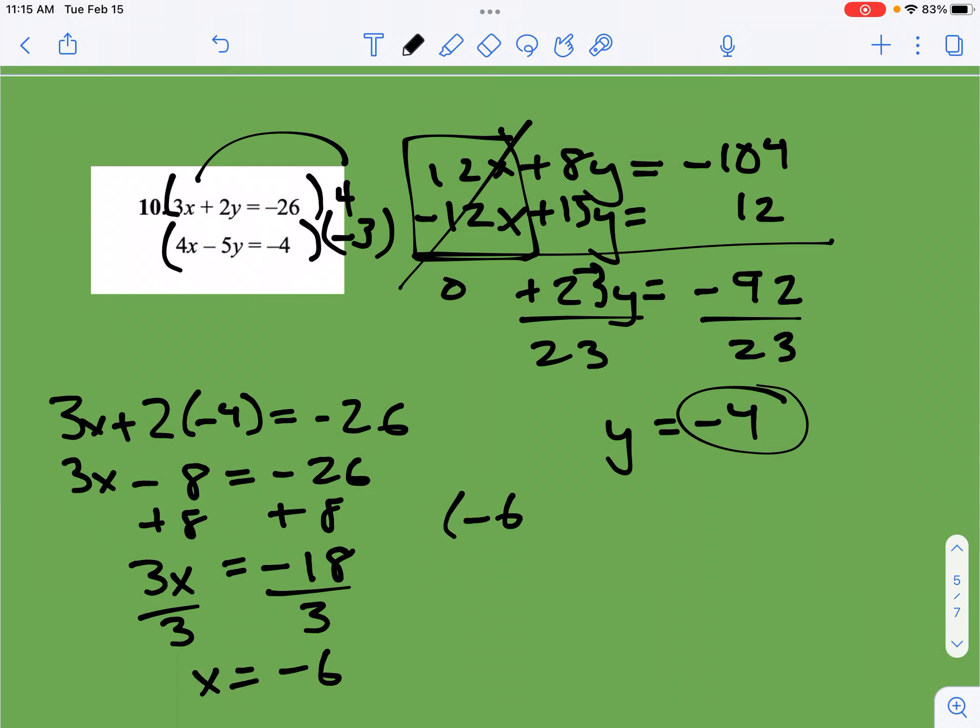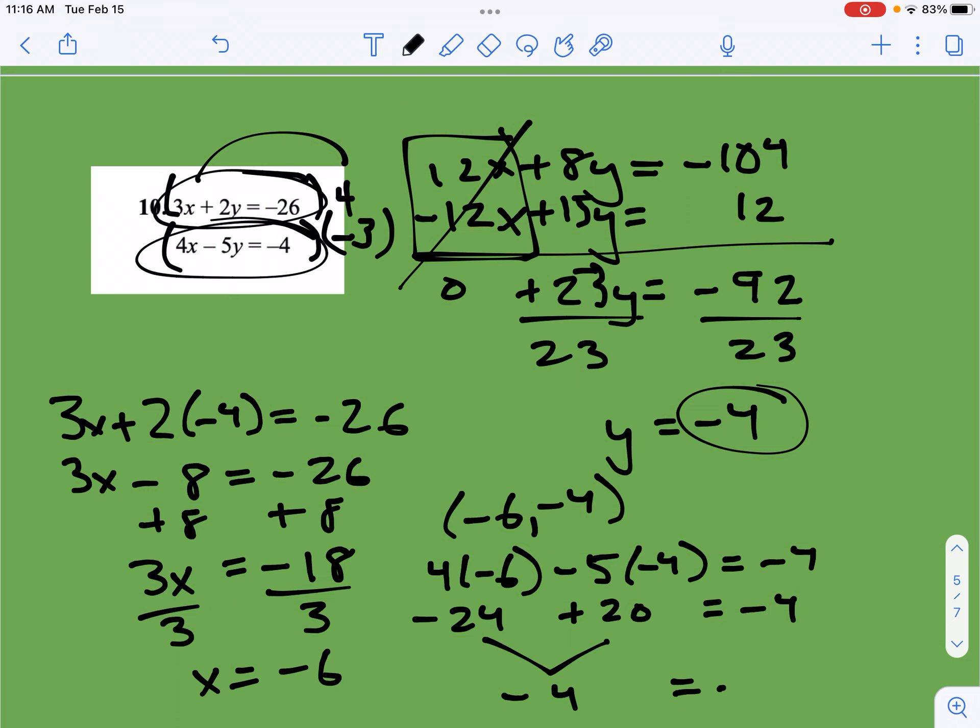So we have the point negative 6, negative 4. Now let's put this in our bottom equation. So 4 times negative 6 minus 5 times negative 4 equals negative 4. Well, this is going to be positive 20, this is going to be negative 24, and those will indeed add up to get me negative 4 equals negative 4, and that's what we want. So this works.